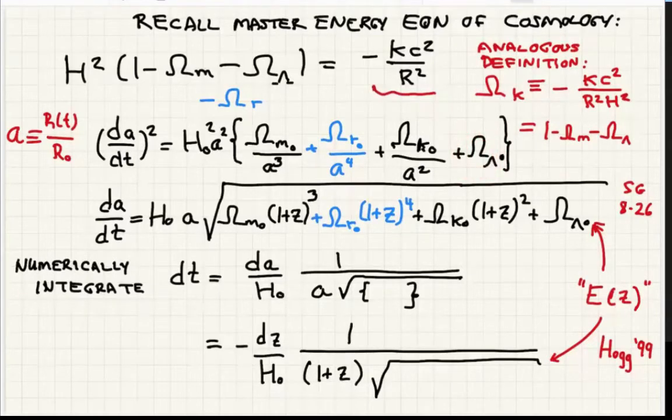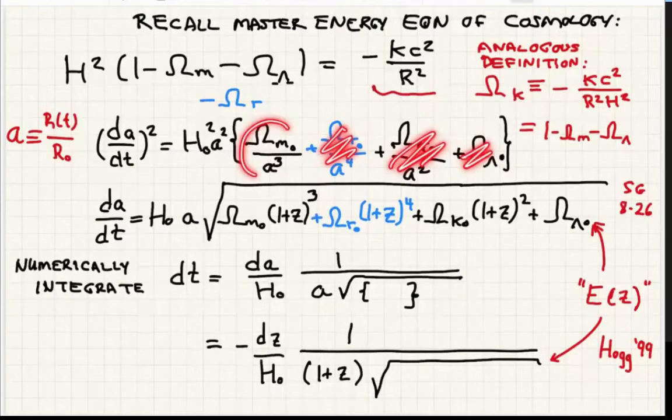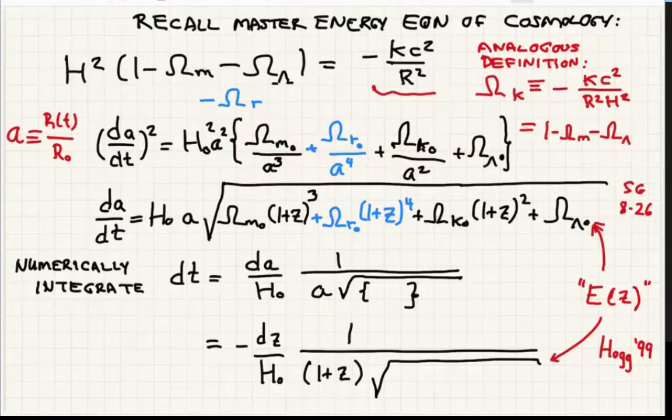It's a very useful equation. You did a bunch of solutions where we ignored this. We did one solution where we had just this one term, the radiation term. That was a pretty good description of the universe in its early stages, first 10,000 years. Then we went to a matter-dominated universe. And we got the T to the two-thirds solution for that one. That was an interesting solution for a critical density universe.